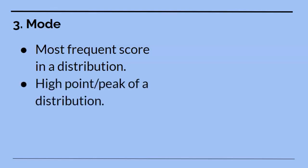Let's finish with the third measure of central tendency, mode. Mode is considered the most frequent score in a distribution. In other words, it is the value that comes up the most in the data set.